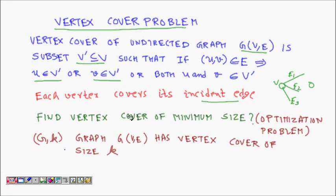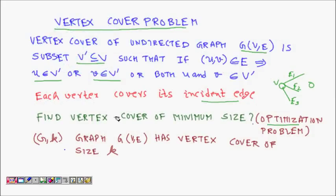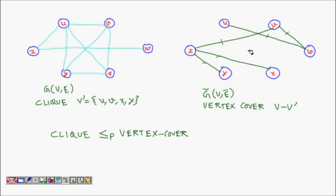Our problem of vertex cover is to find a vertex cover of minimum size. This is an optimization problem. Here we saw that W and Z cover all the edges — this is a vertex cover of minimum size two. The corresponding decision problem is: does the graph have a vertex cover of size K? For example, does this graph have a vertex cover of size one? No. Of size two? Yes — Z and W.